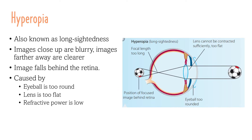Hyperopia, on the other hand, is also known as long-sightedness. Images close up are quite blurry, whereas images farther away are clear. This occurs because the image falls behind the retina. This could be caused by the eyeball being too round, the lens being too flat, or the refractive power being too low.